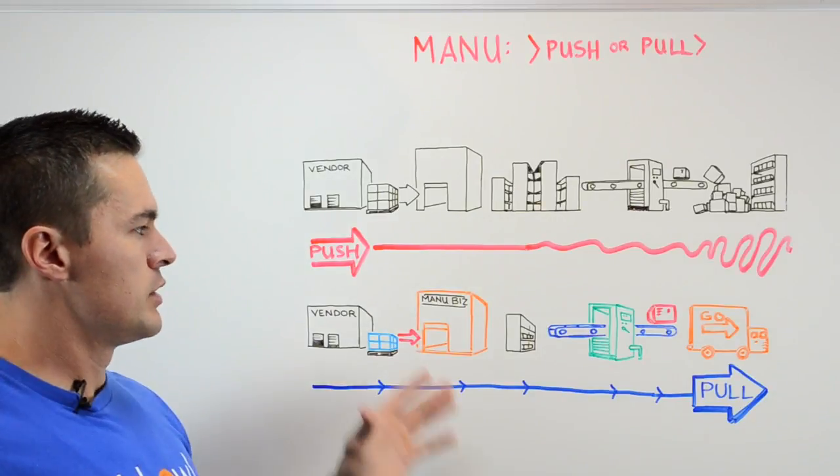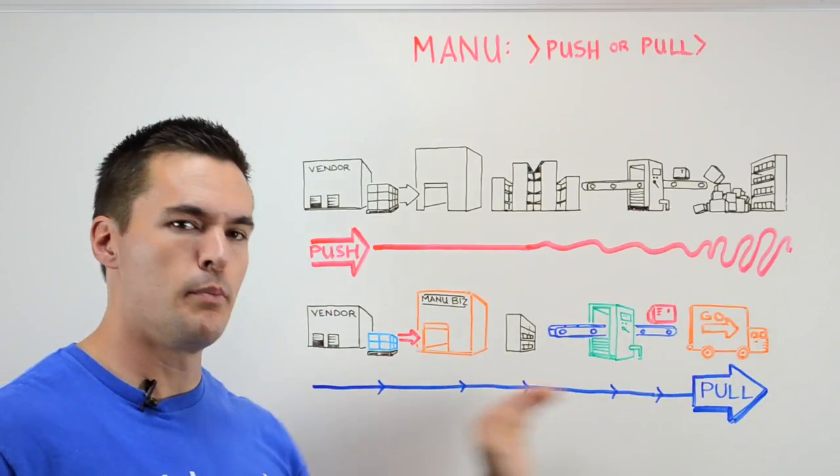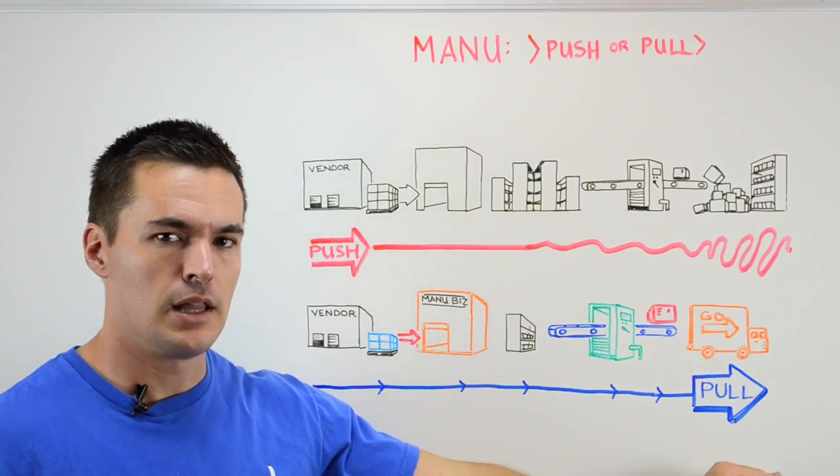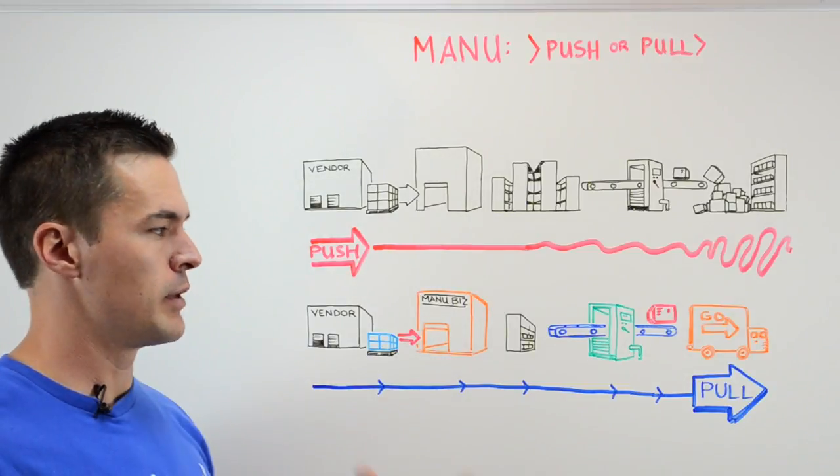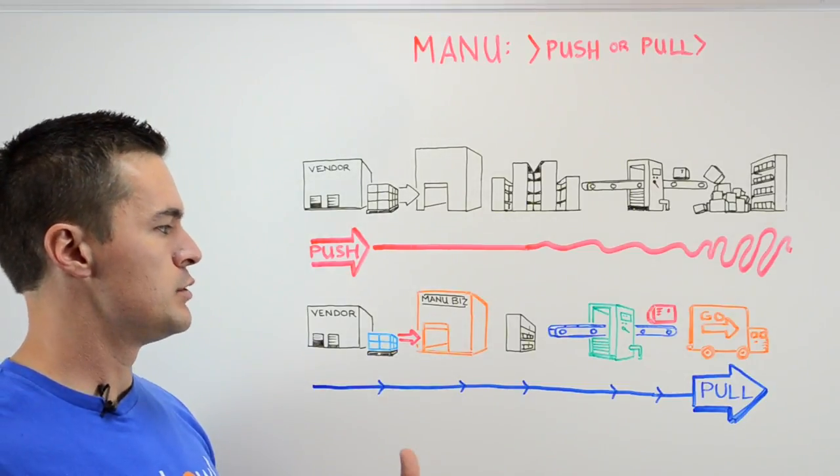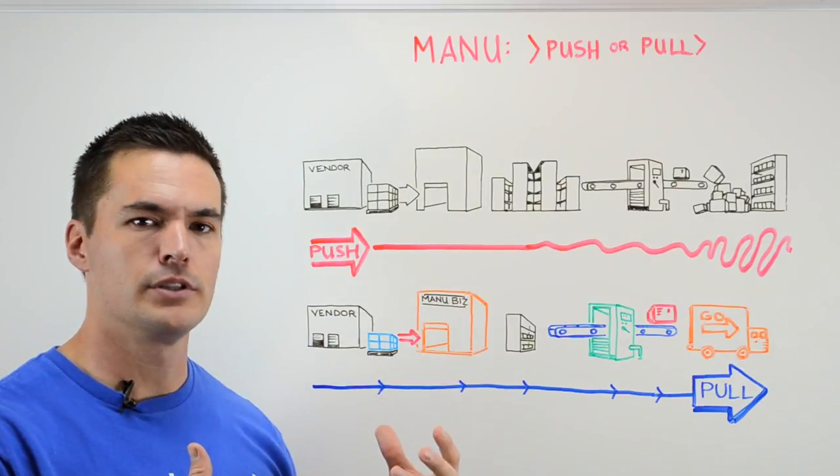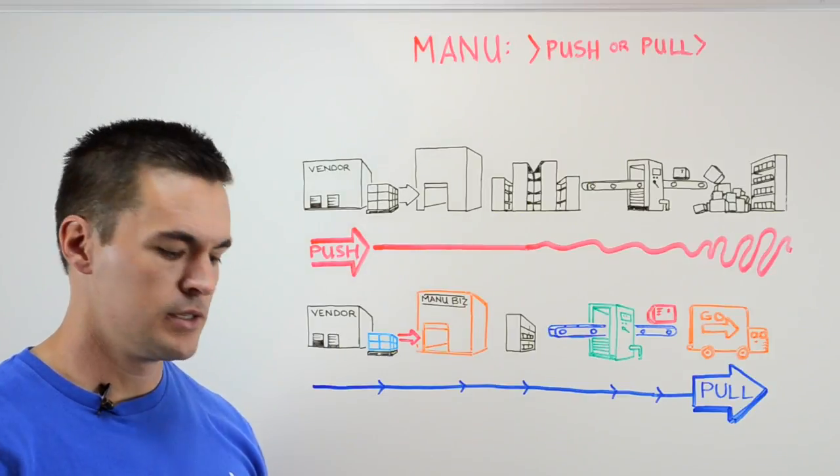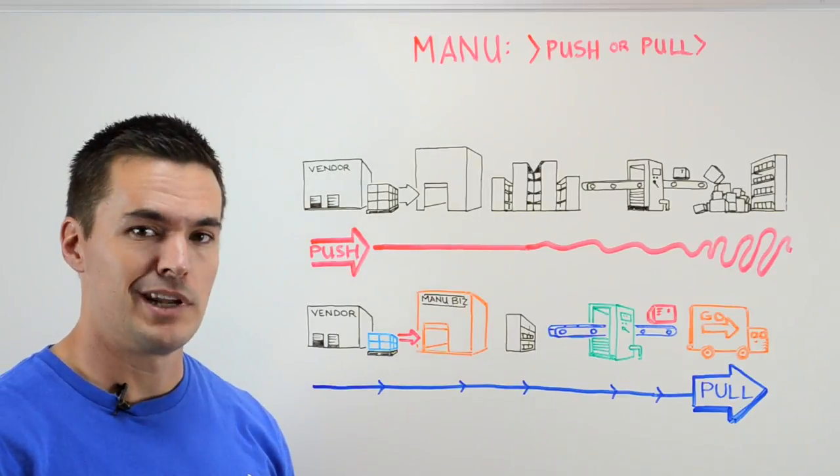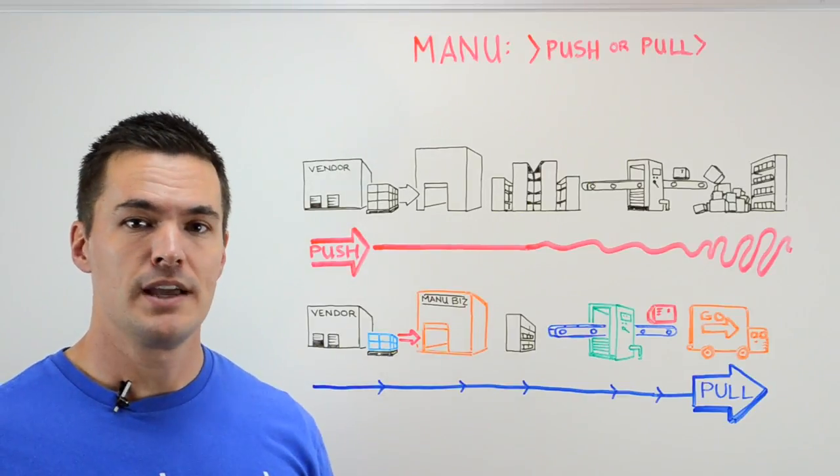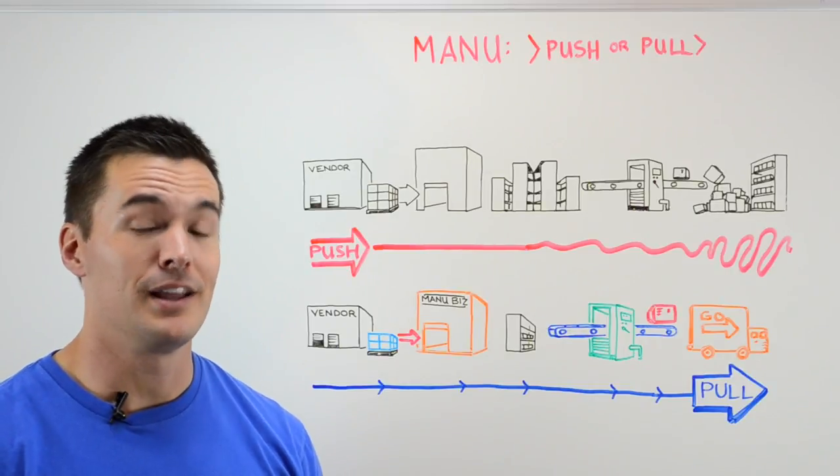So remember, with manufacturing push versus pull, pull allows you to stay a lot more lean, make better use of your cash flow, and hopefully help your bottom line so you're not tying up resources in wasted space or inventory sitting there. That's this Whiteboard Wednesday. There's some dogs barking in the background and it's driving me crazy.